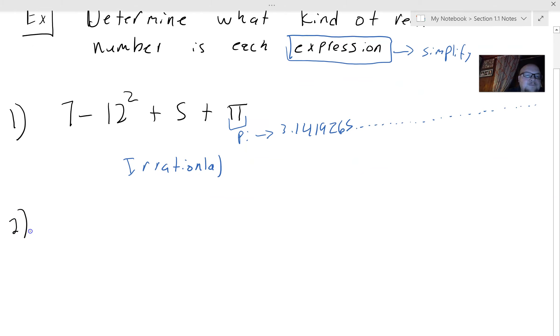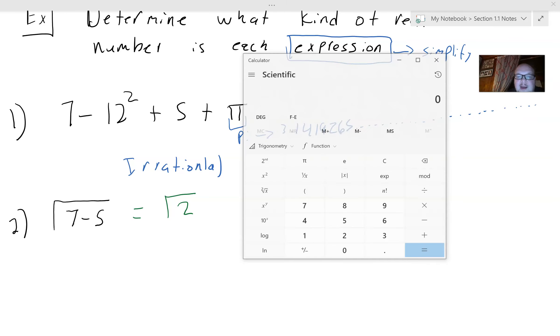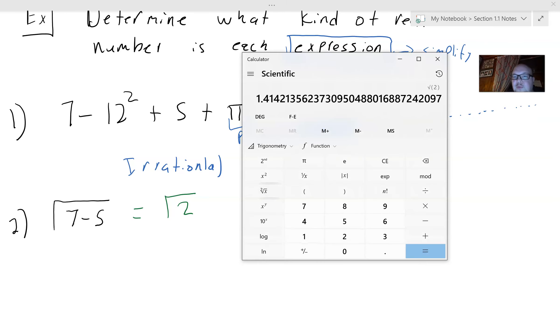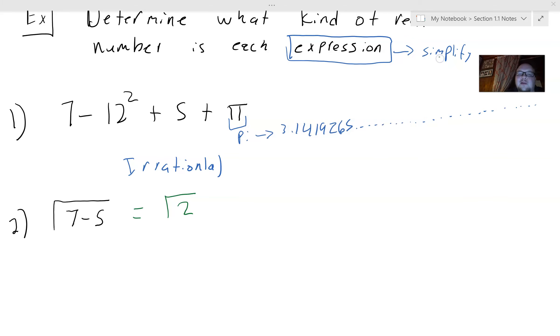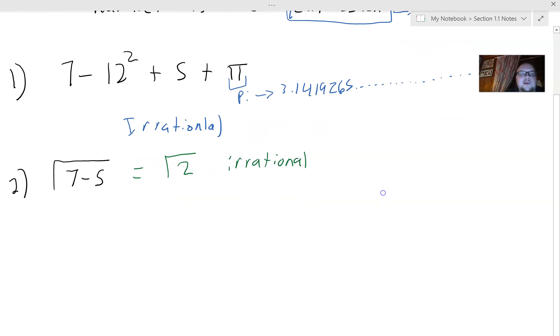Now, number two, square root seven minus five. All right. So this is where we use our PEMDAS. So we do the inside, because this is grouping. So this is square root of two. Well, if you type square root of two in, it's just going to be a decimal that keeps continuing. It's one point, blah, blah, blah, blah, blah. And you can look at it and see. So if we do square root of two, we see that it just keeps going. It does not stop. This is also irrational. So it is a real number, but it's just irrational.